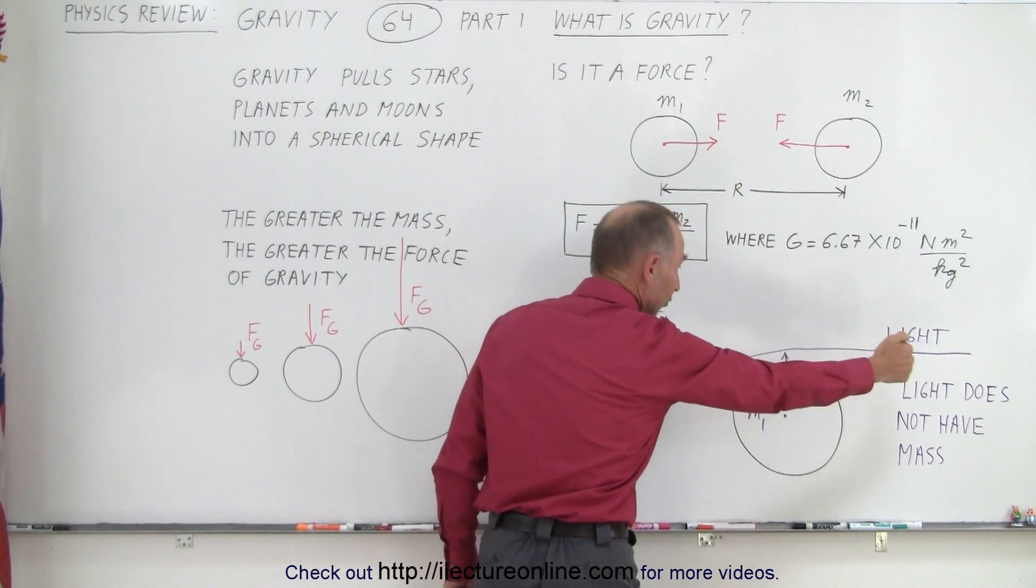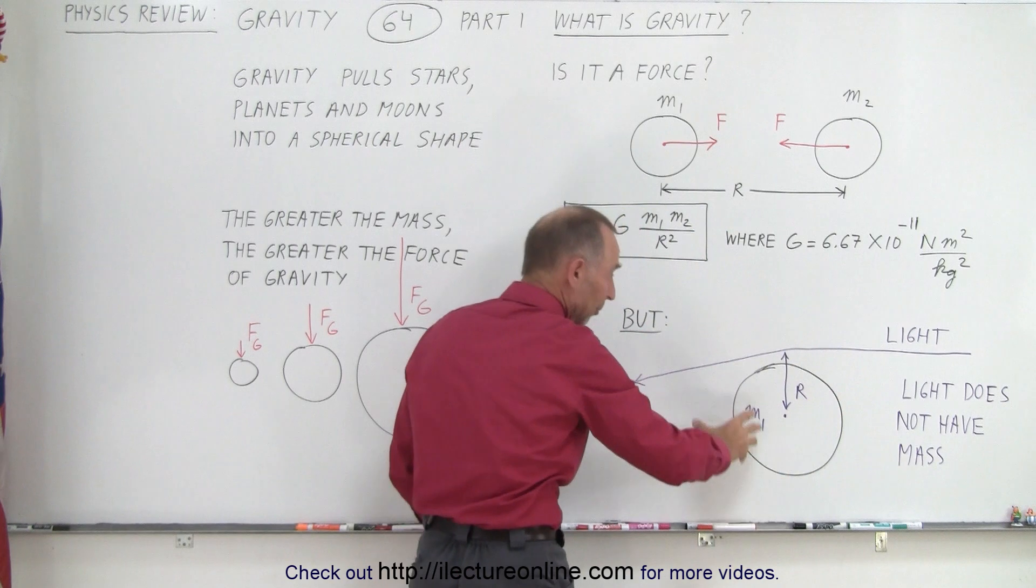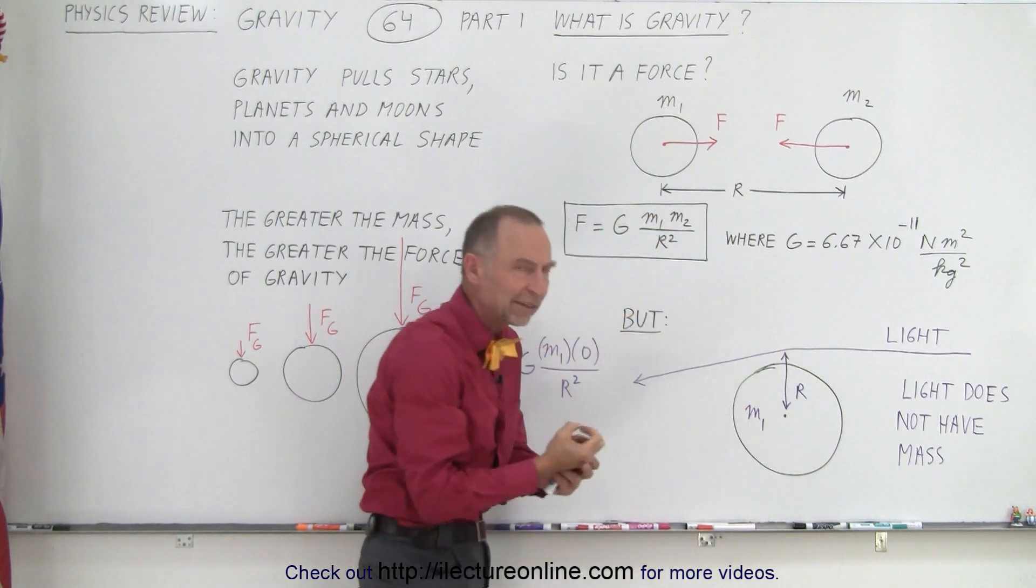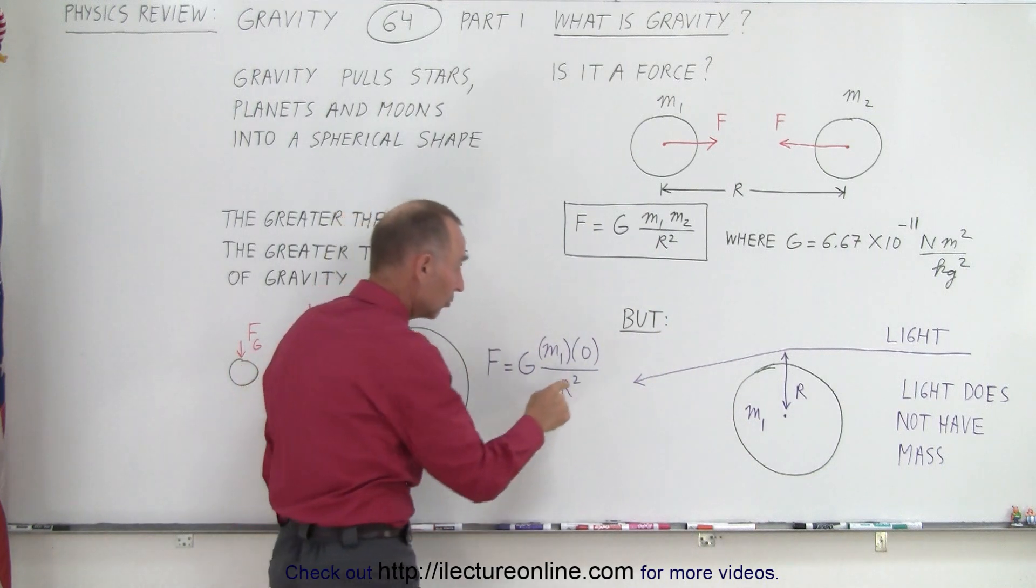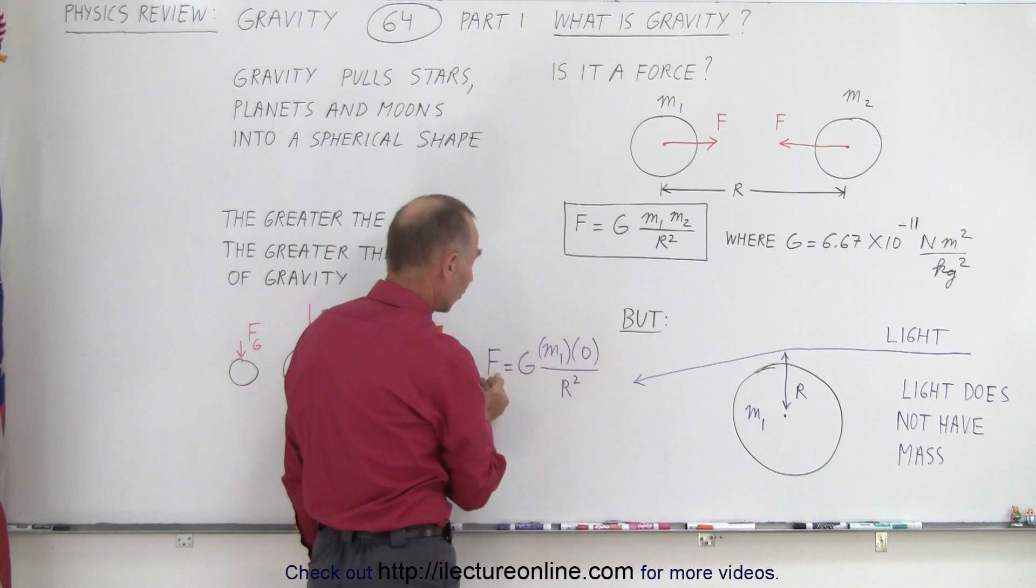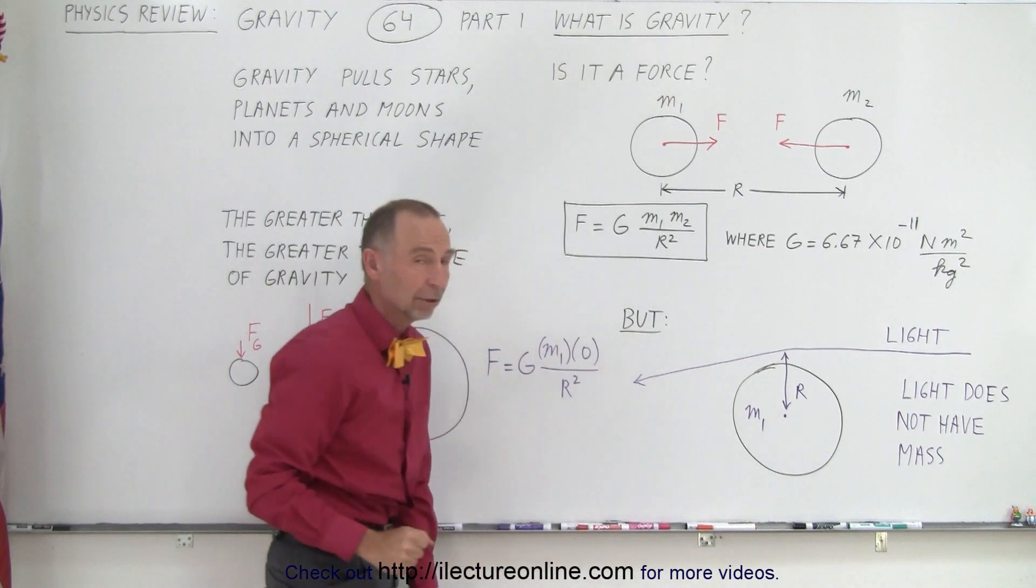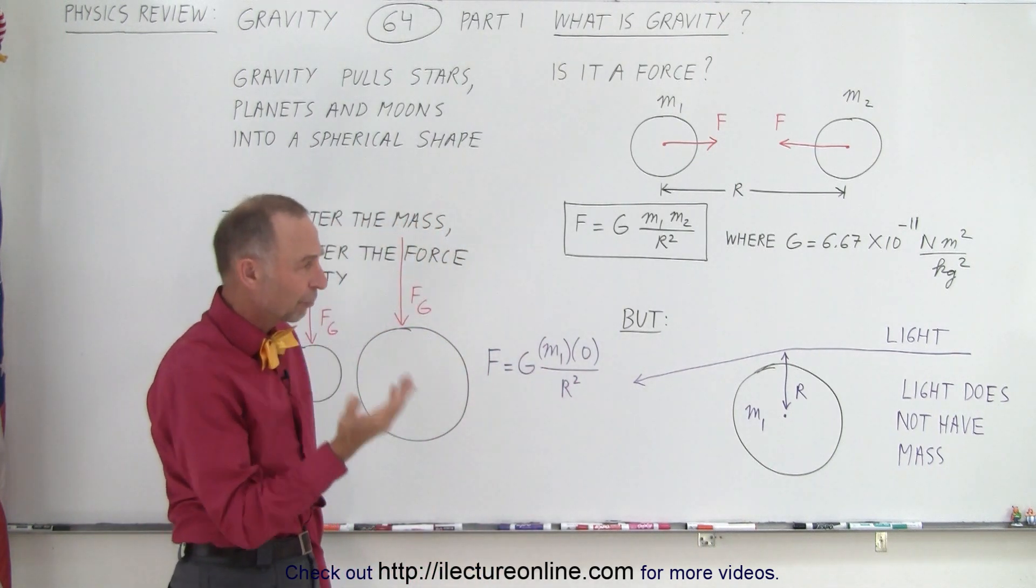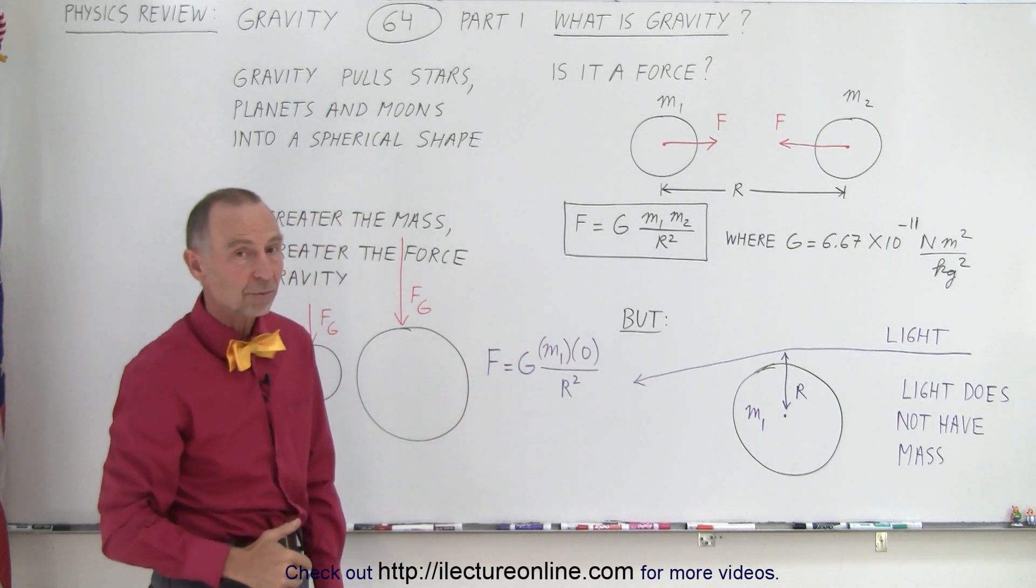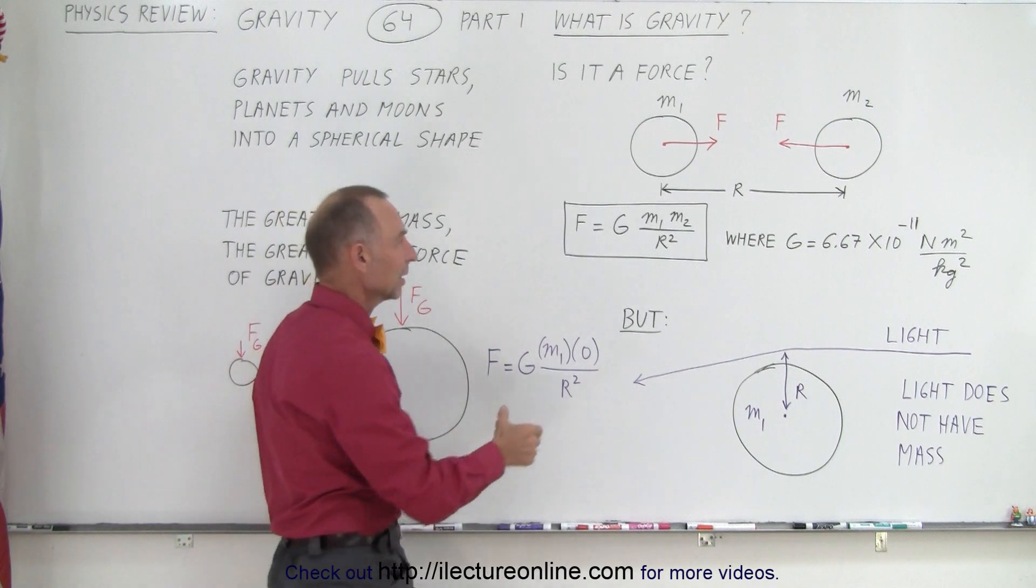And of course, as light passes a very large object, like another star or planet, it will actually change direction due to the gravitational attraction. But notice, there's no mass here. Light doesn't have mass. So the force should be zero. If the force is zero, then how can light bend around a large object? So there's more to it than meets the eye.